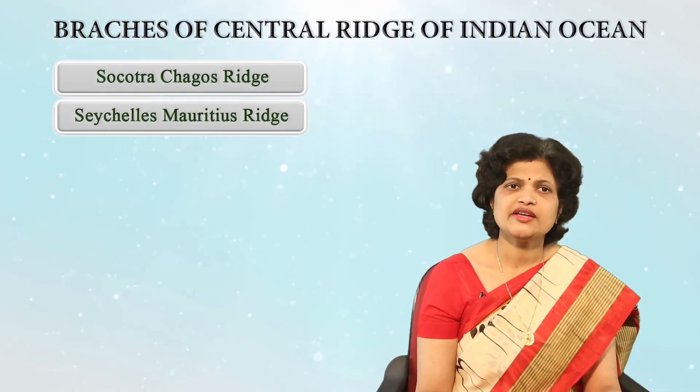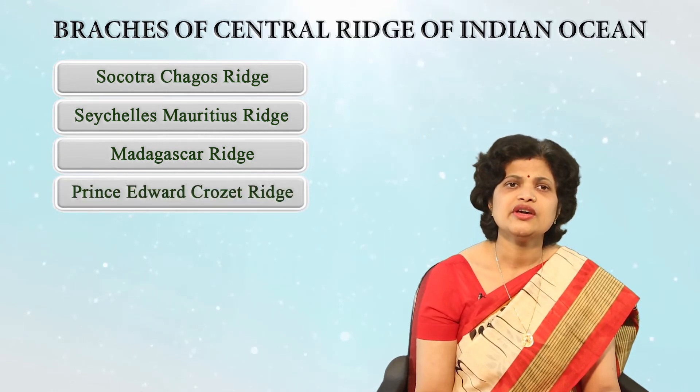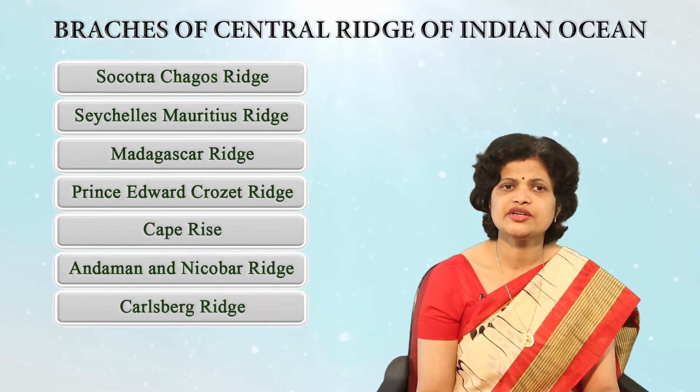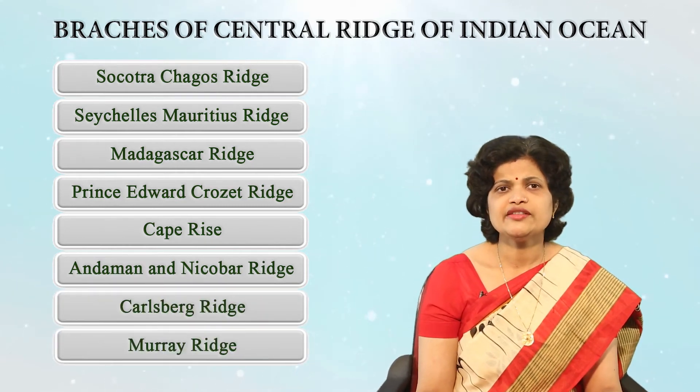Similar to the Atlantic Ocean, there are several branch ridges from the main central ridge, including the Socotra-Chagos Ridge, Seychelles-Mauritius Ridge, Madagascar Ridge, Prince Edward-Crozet Ridge, Andaman and Nicobar Ridge, Carlsberg Ridge, and Murray Ridge. You should locate these ridges in the figure. Most ridges are named based on their locations — for example, some are named after nearby islands.